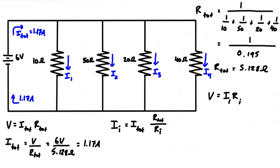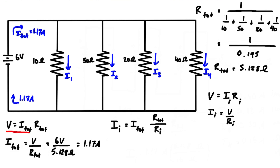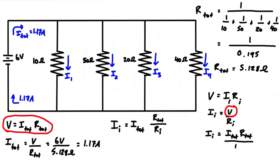The individual current through a resistor equals the voltage drop across it divided by its individual resistance. The voltage drop across any of the individual parallel resistors is the same as the drop from the top node to the bottom node — V equals I_total times R_total. Substituting in, the individual current equals I_total times R_total all over the individual resistance.